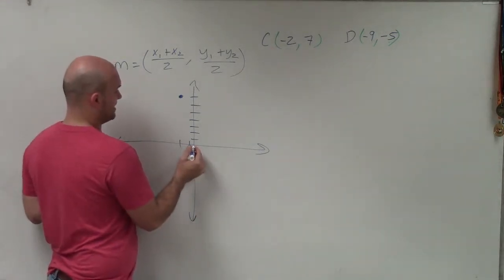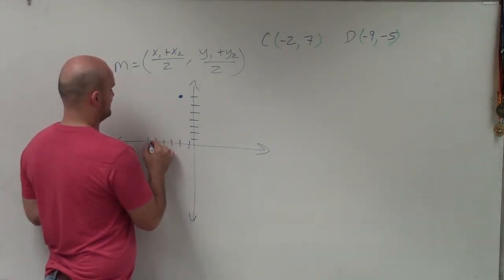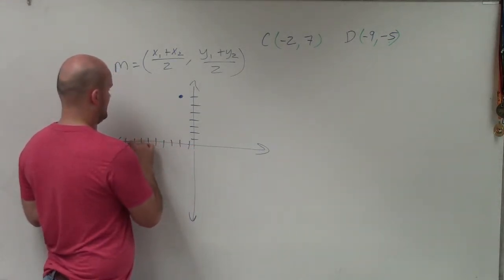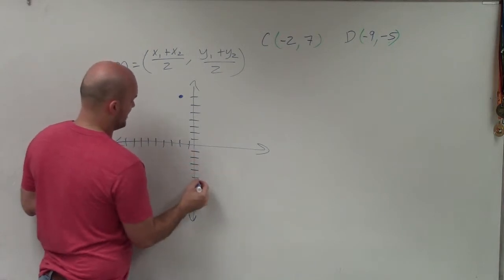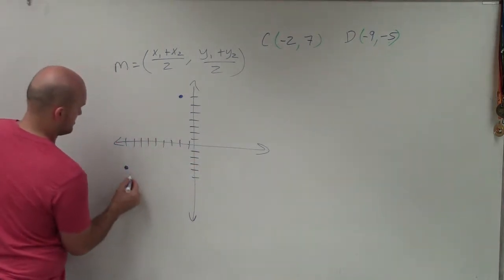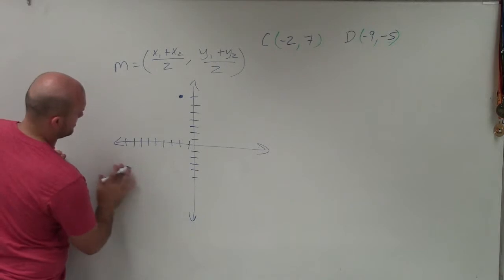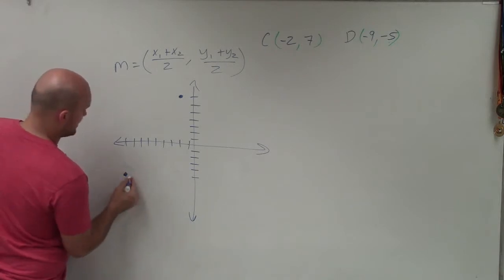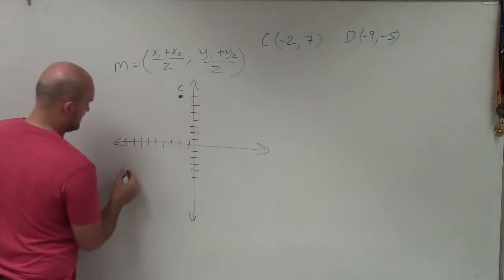And then we have negative 9, negative 5. So that's point D, and that's point C.